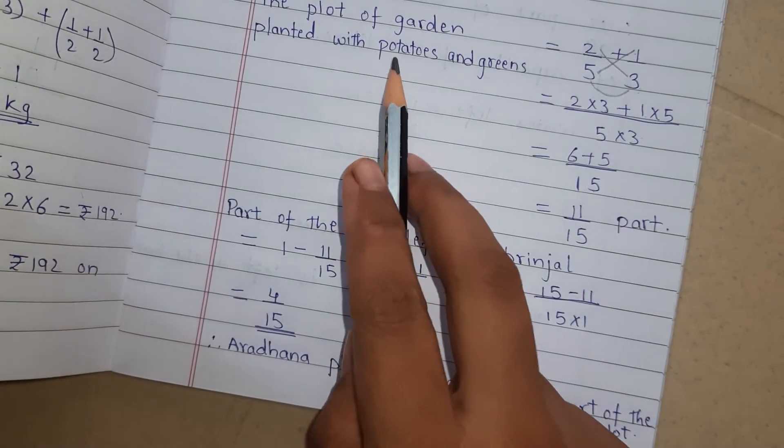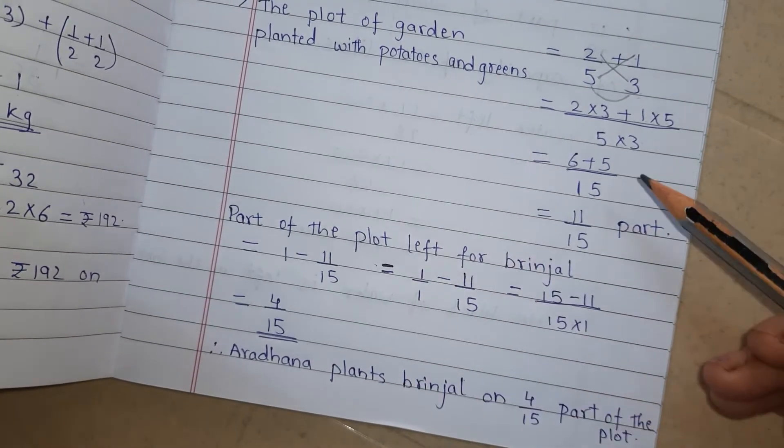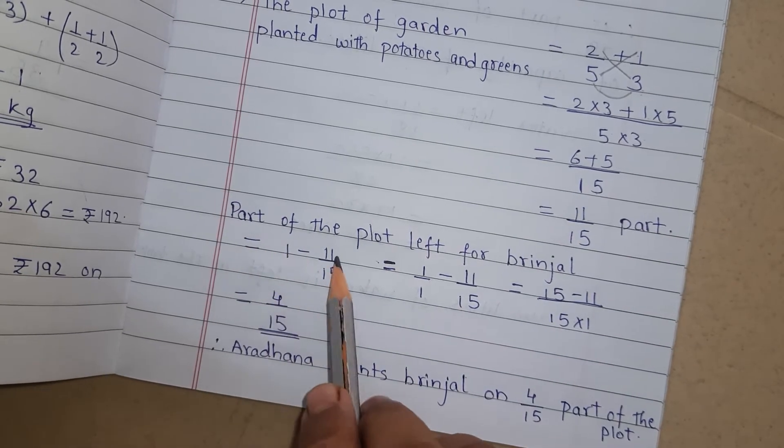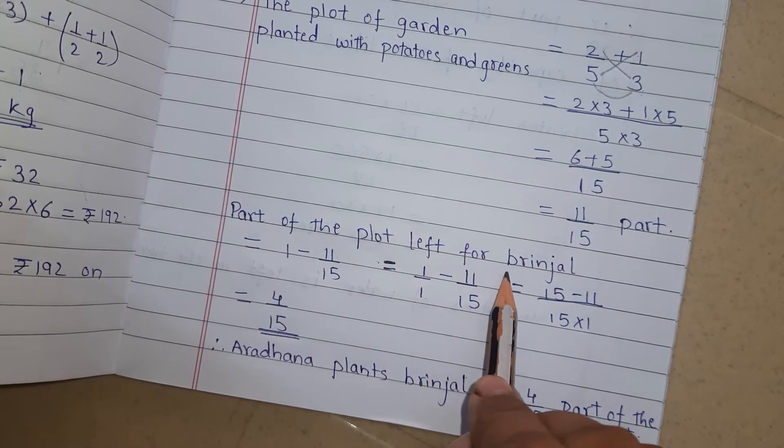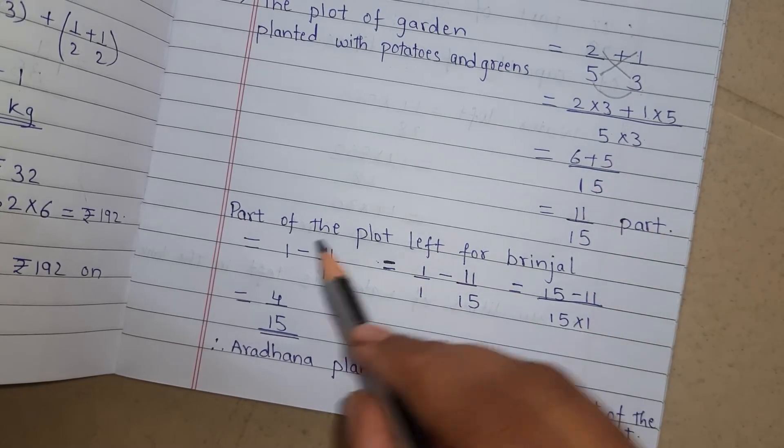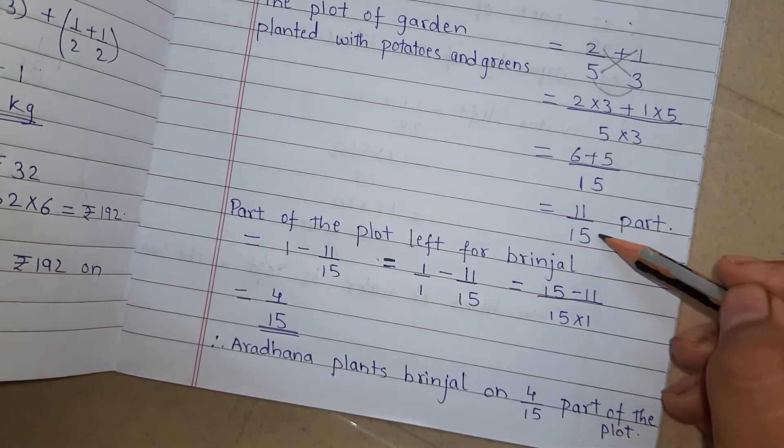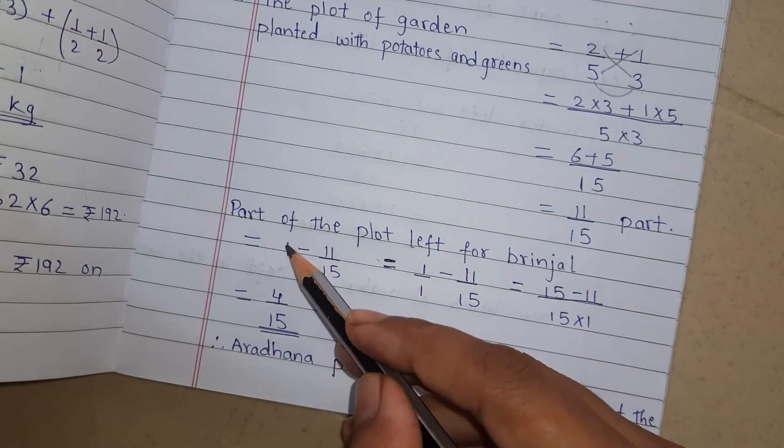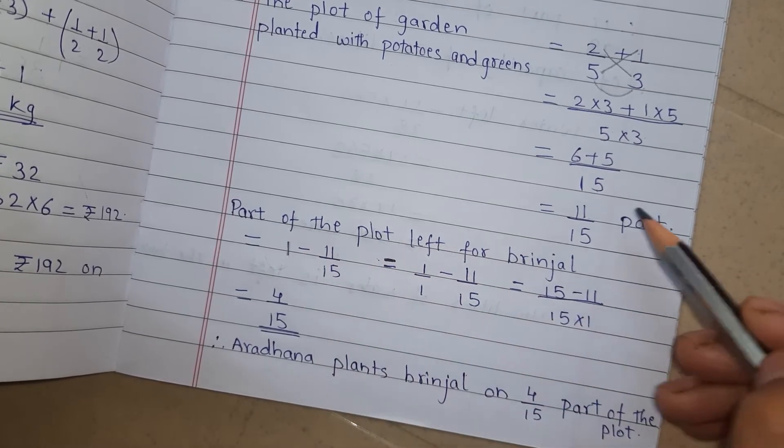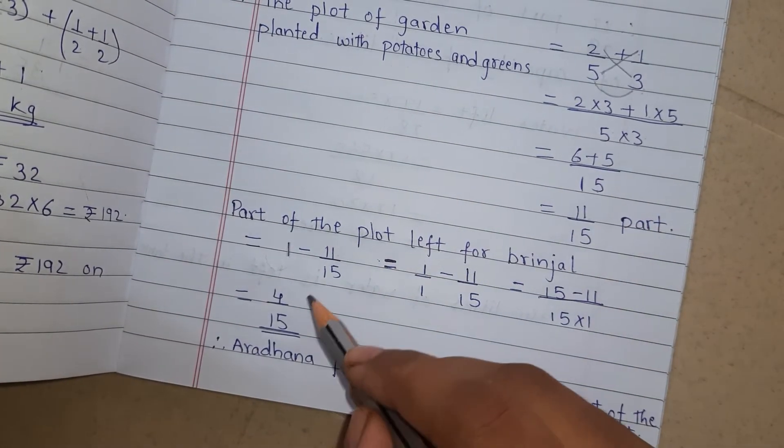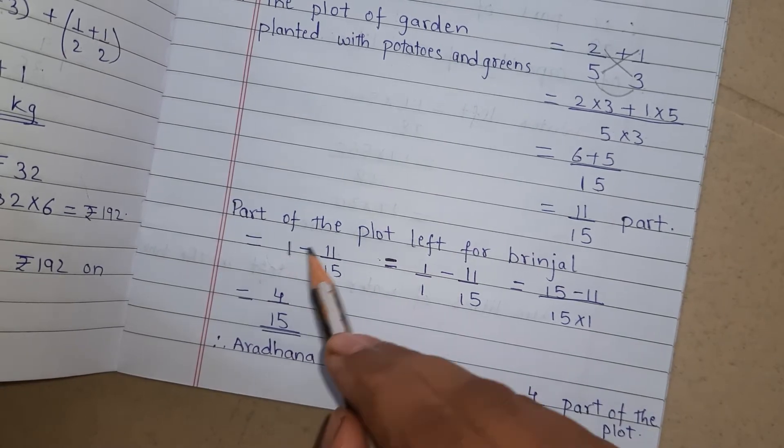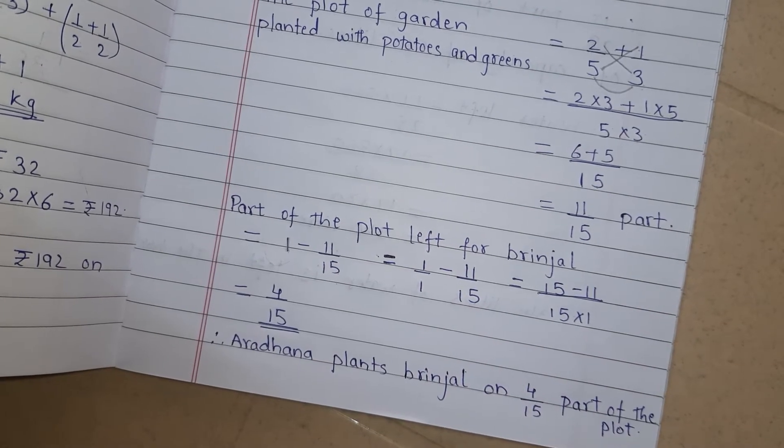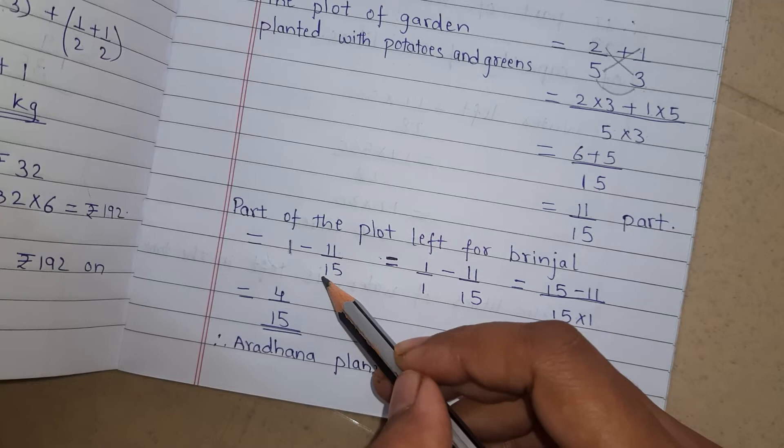So total part of potatoes and leafy vegetables is 11/15 part. So now the part of the plot left for brinjals. Now whole garden means 1 we have to take and potato and green part is 11/15. So from 1 we have to subtract 11/15.